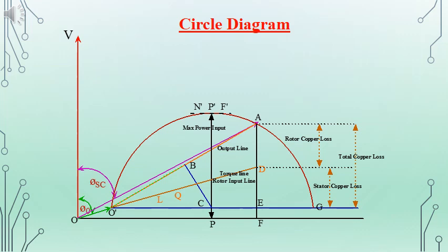In order to obtain the maximum power input possible for the induction machine, we draw a tangent to the semicircle such that it is parallel to the horizontal line OF — given as N'P'F. The length P'P will be the maximum power input.